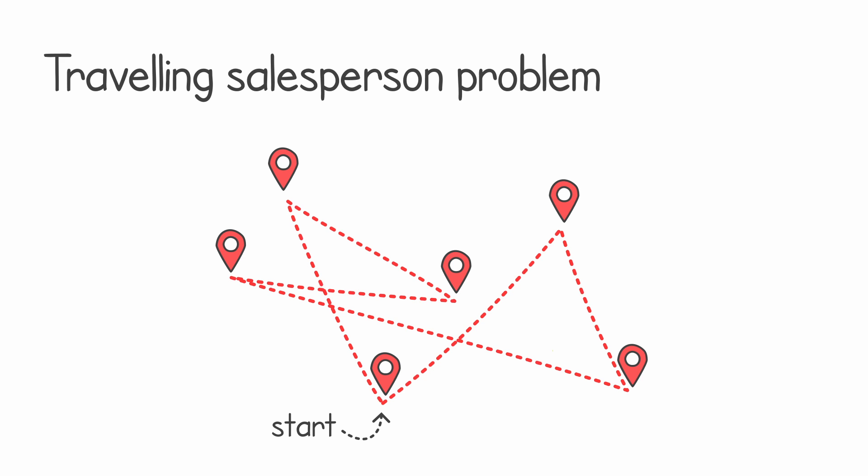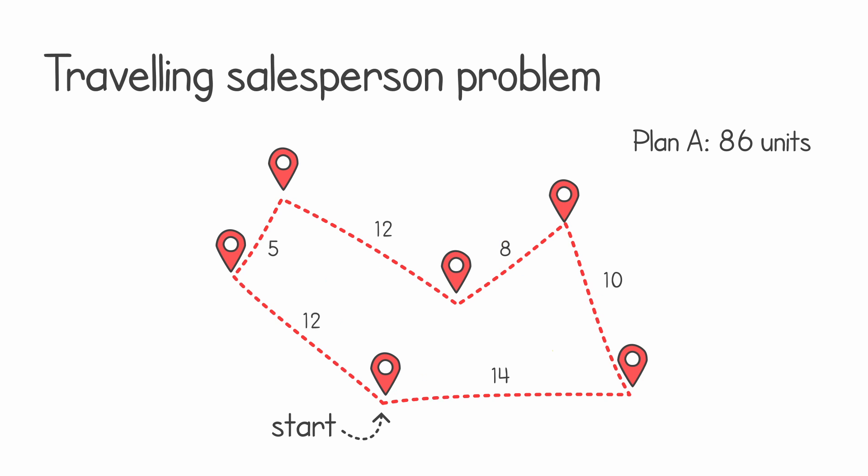Here is an example of a route that visits every single one of these cities starting from our starting position. We can measure each one of these distances, add them all together, and in this example it gives us 86 units — that might be kilometers, meters, or whatever unit of distance you are using. Here is another example visiting all of these points just once, and if we count the distance this time, we have a total of 61 units — a much shorter path.